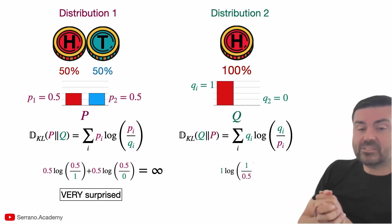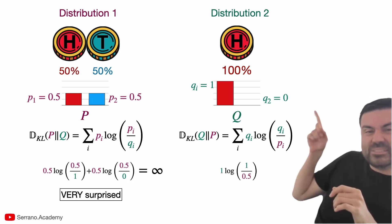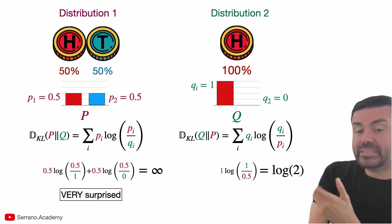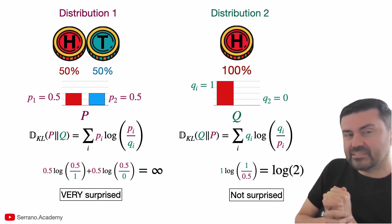For the one on the right, on the other hand, we have one times the logarithm of one over 0.5 plus zero times something else. So I'm just removing this zero here. But when I calculate this number, I calculate it to be logarithm of two, which means I won't be that surprised if I flip a fair coin and it lands on heads.